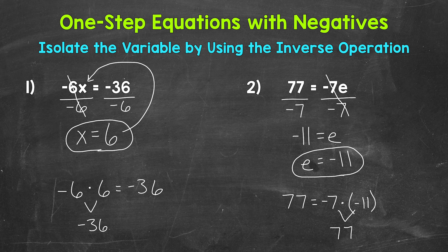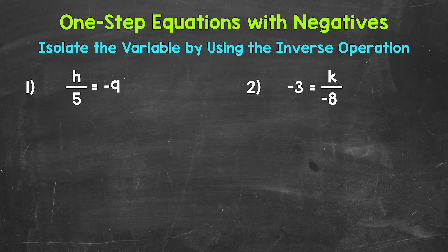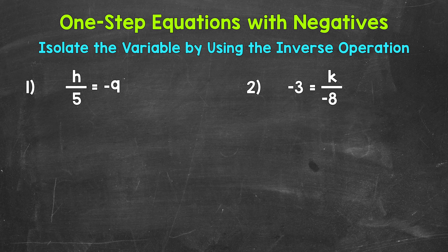There's how we solve one-step multiplication equations with negatives. Let's move on to division. Here are our examples of one-step division equations with negatives. Let's jump into number one, where we have h divided by 5 equals negative 9. We need to isolate the variable h — figure out what h equals. Since h is being divided by 5, we need to undo that division by using the inverse operation — the opposite operation.